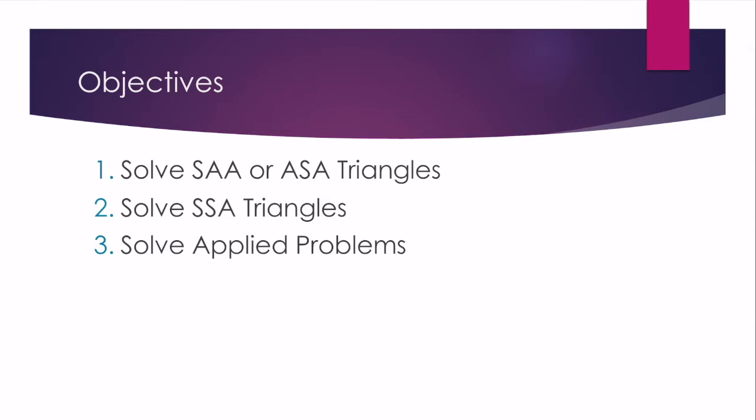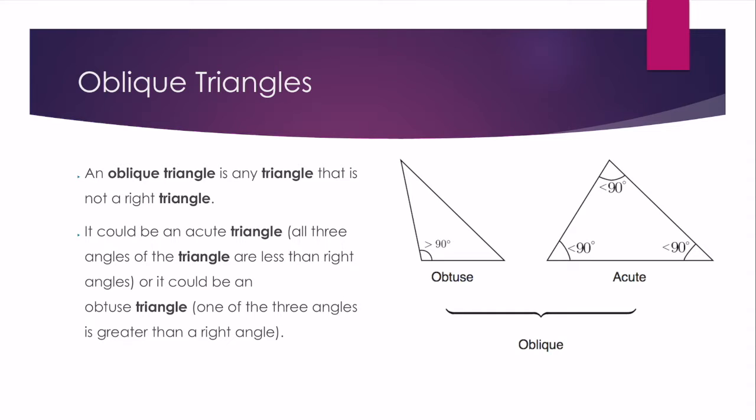So friendly reminder, an oblique triangle is any triangle that's not a right triangle. Remember, right triangles have 90 degrees. These could be acute triangles where all three angles are less than 90 degrees, or it could be an obtuse triangle where one of the angles is greater than 90 degrees.